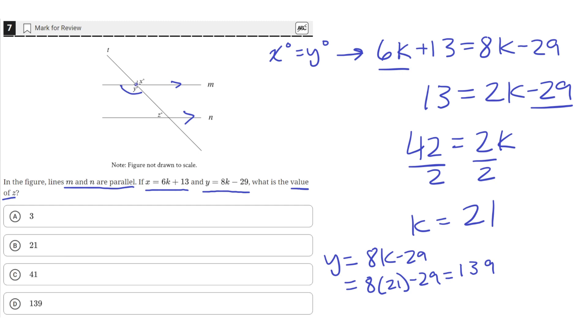So if we move this intersection point down here, we'll see that Y corresponds to this angle right here. So that means this angle is 139 degrees as well.